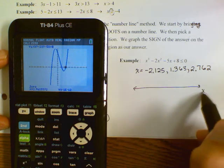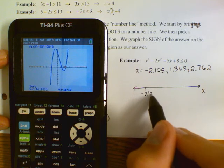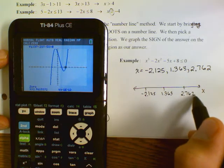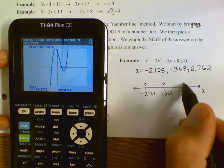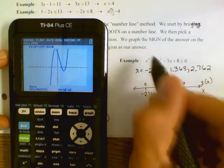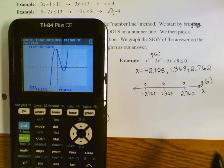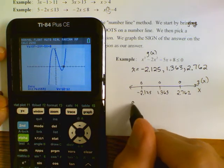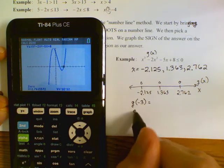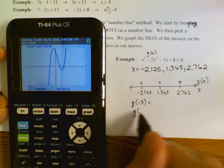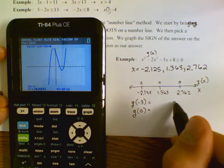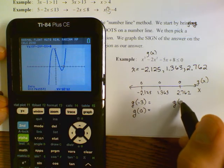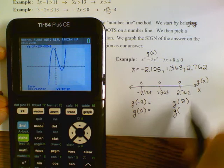So our x values where g(x) equals zero are negative 2.125, 1.363, and 2.762. Let's call this function g. Now we test points: at x equals negative 3, at x equals 0 (between the first two roots), at x equals 2 (between 1.363 and 2.762), and at x equals 3 (past the last root).